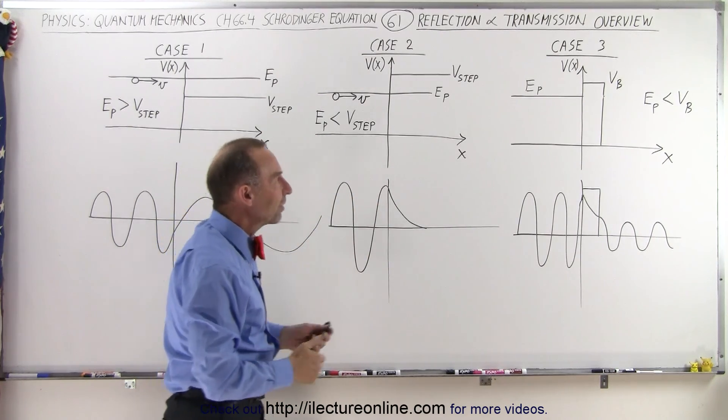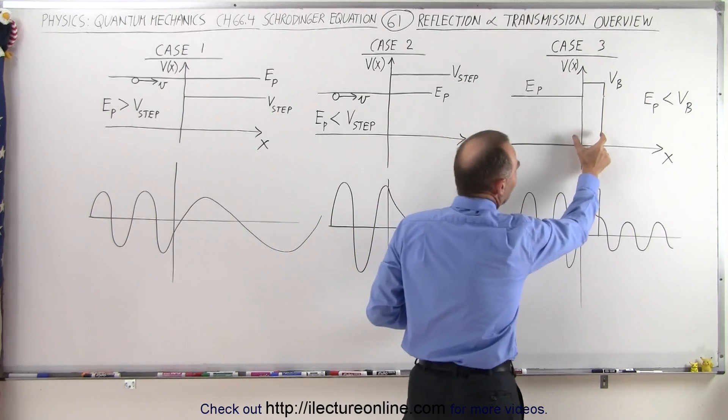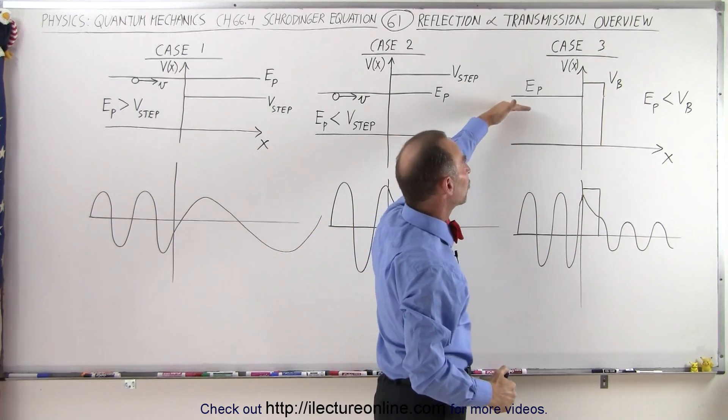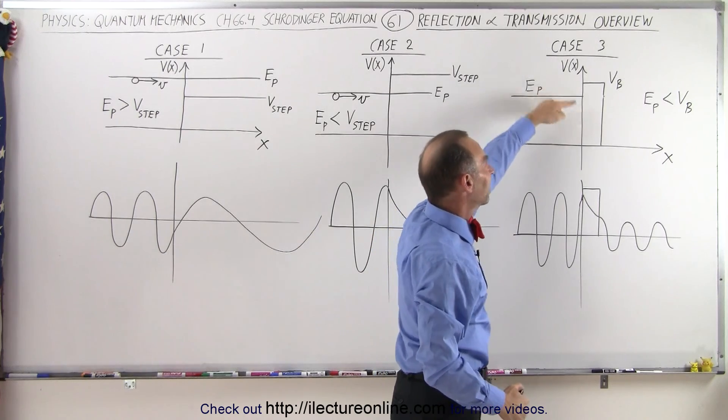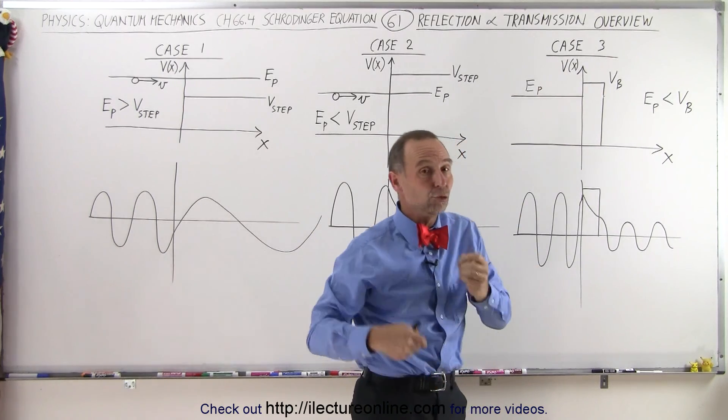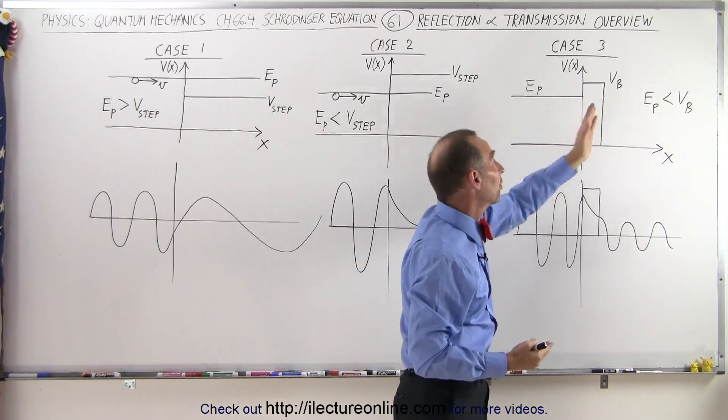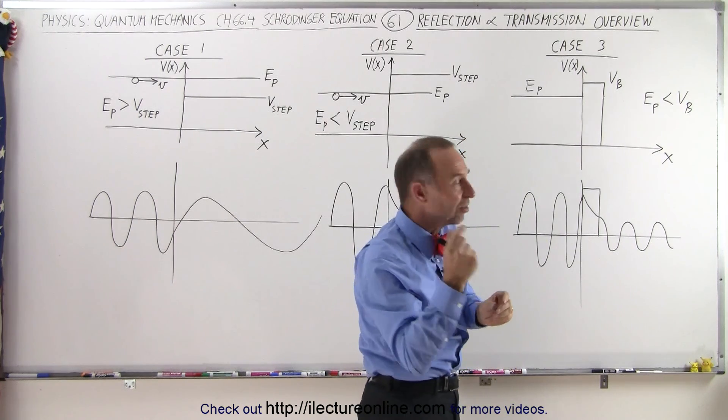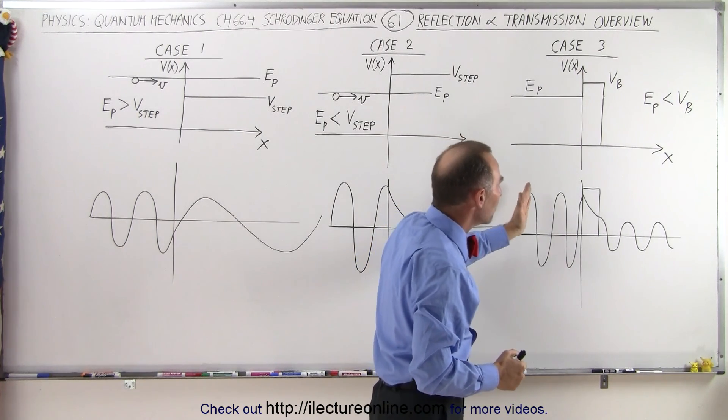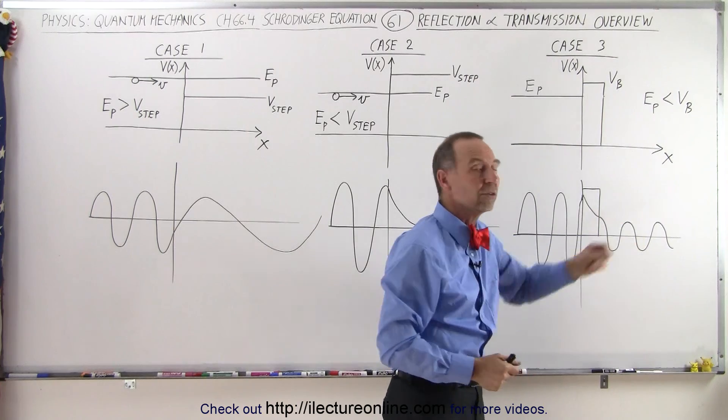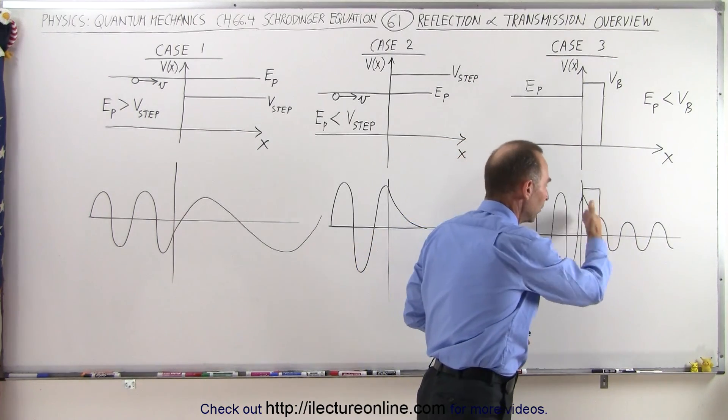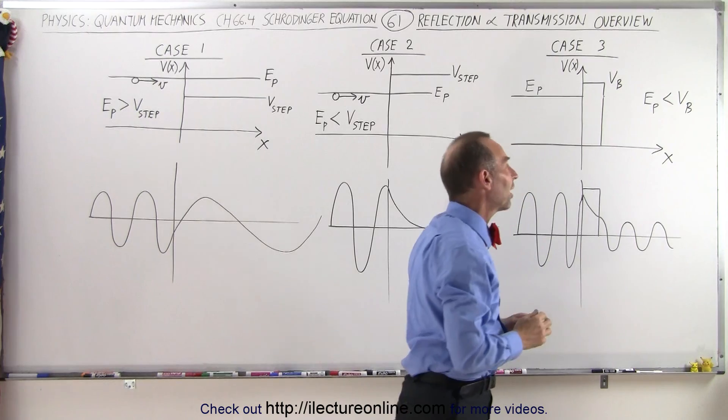A third possibility is that there's a barrier, but the barrier is of a finite width. And because of that, if the energy of the particle is less than the potential of that barrier, normally you would expect none of them to penetrate. But if the barrier is thin enough, the particle could potentially make its way through and continue on the other side. So there would be a transmission on both boundaries and would continue on the other side.